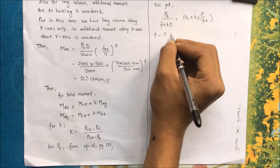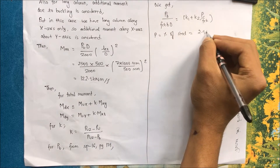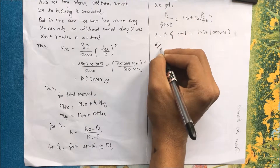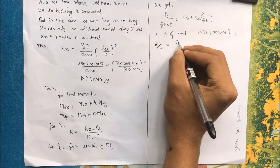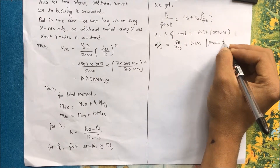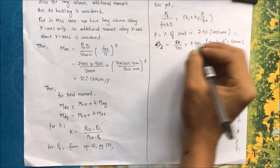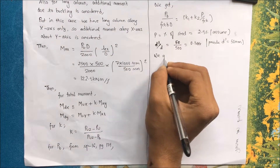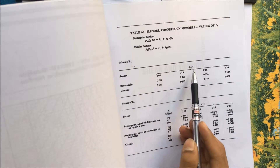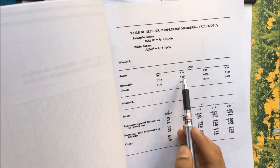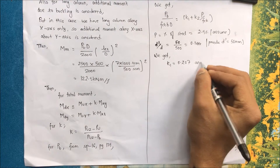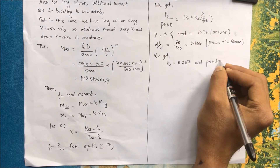From SP 16: Pb / (fck × b × d) = k1 + k2 × (p / fck). Assuming steel percentage p = 2.5%, and d'/d = 50/500 = 0.1 (with effective cover d' = 50 mm). For a rectangular section with d'/d = 0.1, k1 = 0.207.